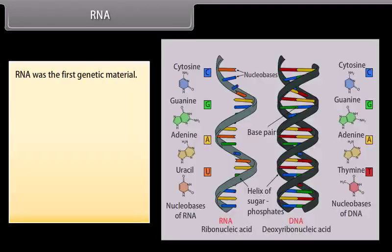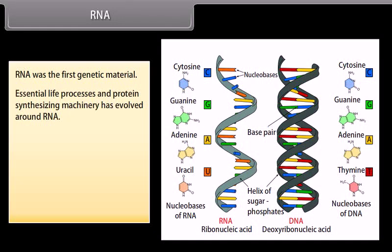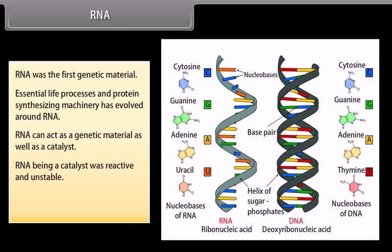RNA was the first genetic material. Essential life processes and the protein-synthesizing machinery evolved around RNA. RNA can act as both a genetic material and a catalyst. However, RNA being a catalyst was reactive and unstable. Thus, DNA evolved as a stable genetic material from RNA.